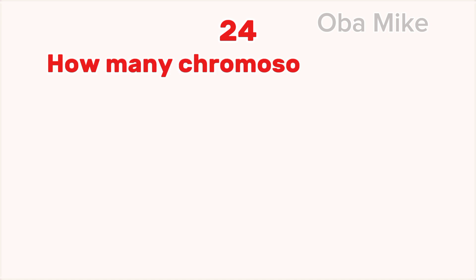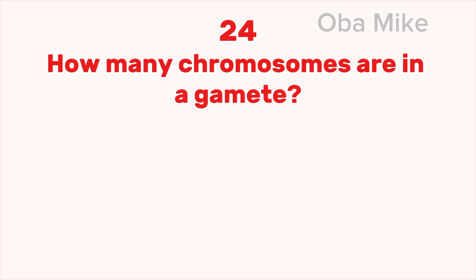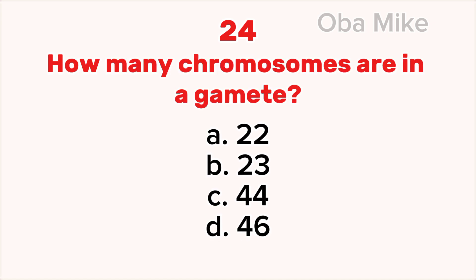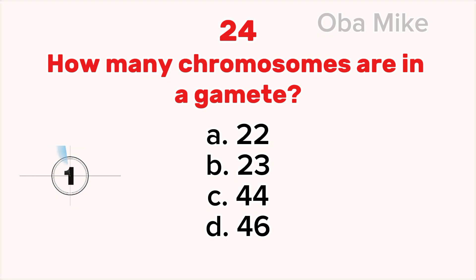24. How many chromosomes are in a gamete? A. 22, B. 23, C. 44, D. 46. The correct answer is B. 23.